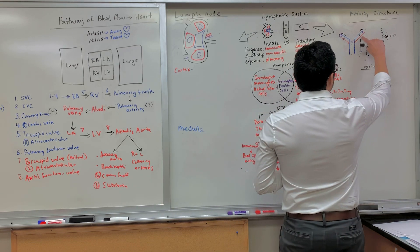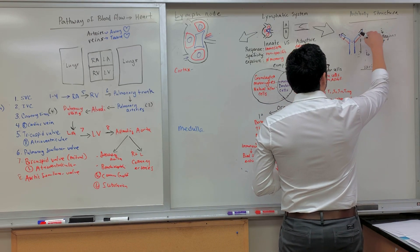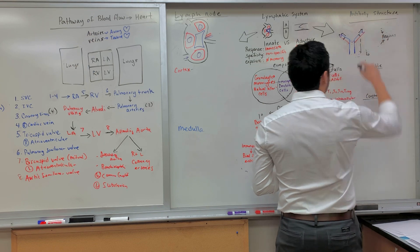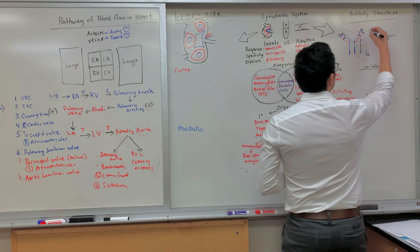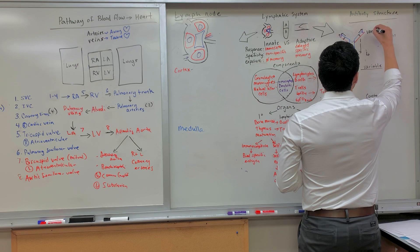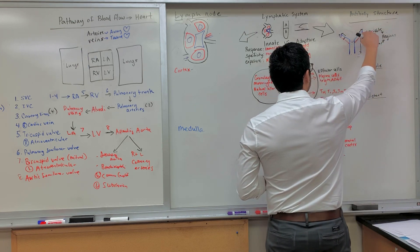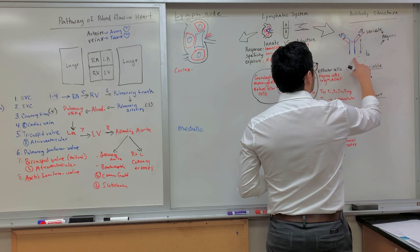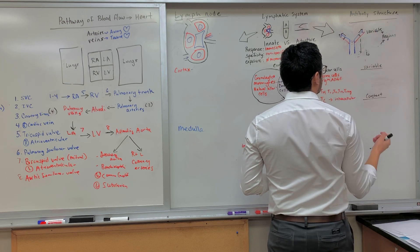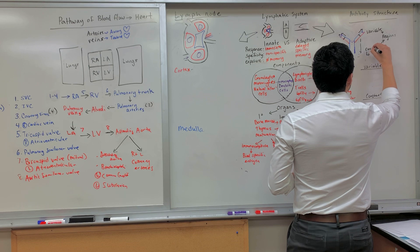This part here at the top — is this the variable or the constant region? Variable, yes, it's variable. It can change. So you have the variable region here at the top, and then the part from the squiggly line all the way down — what is that? Constant. Good, so you have the constant region.